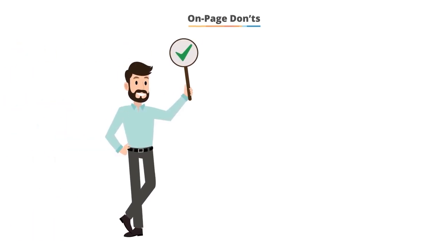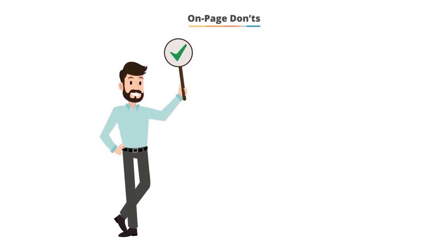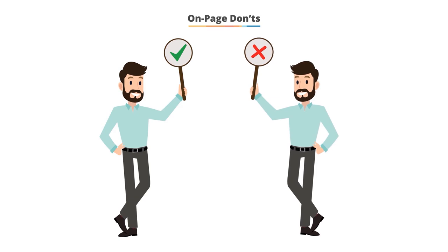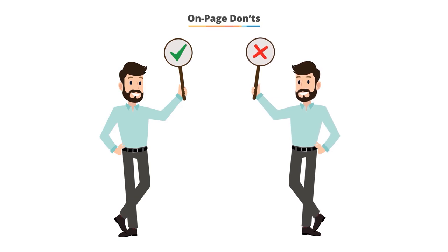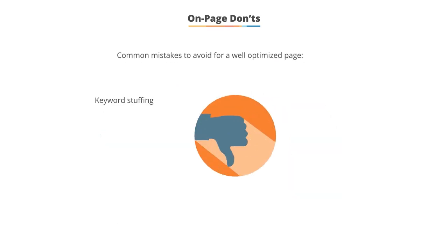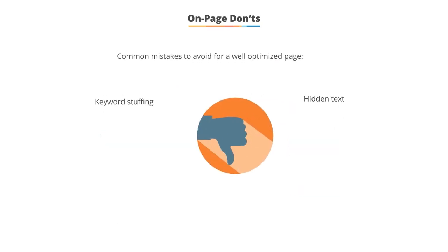At this point, we've covered a lot of things that are important and that you should be doing when optimizing your on-page content. Now let's go a different direction and cover things that you should not be doing: keyword stuffing, hidden text, repetitive anchor text, and cloaking.